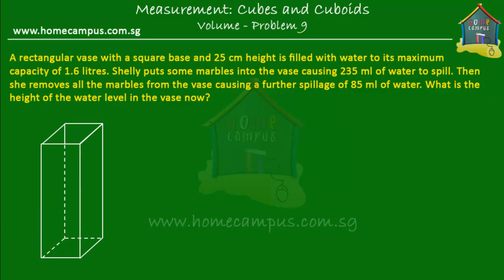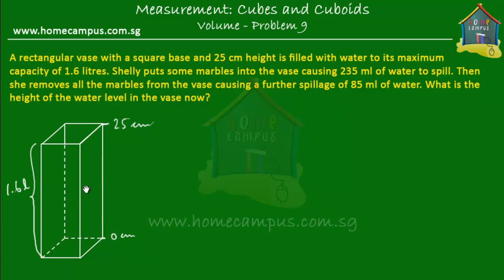There was a vase, and that vase was filled to the maximum capacity, which was 1.6 liters. So it was filled to its maximum height of 25 centimeters. This was 0 centimeters of height, and this is 25 centimeters of height. The capacity of the vase is 1.6 liters, so when it was filled to the top, it could hold 1.6 liters of water.